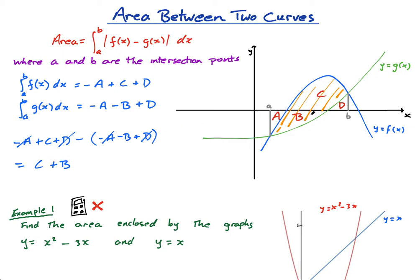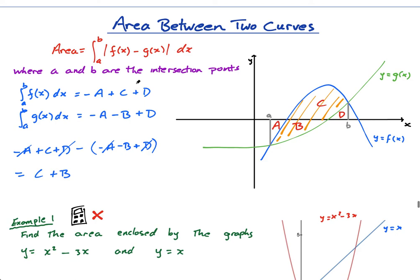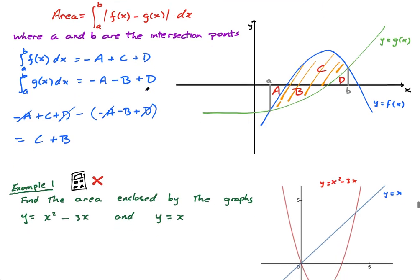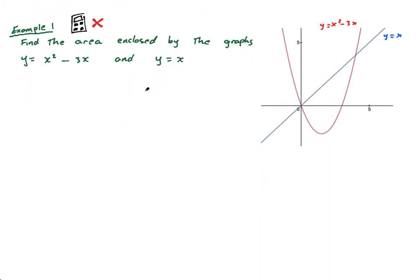And look — what is this orange area? It's c plus b. I actually think that is pretty cool. It shows you how, even though a lot of this is happening underneath and above the x-axis, this formula makes things much easier. Let's go down and look at two examples — one without a calculator and one with a calculator.